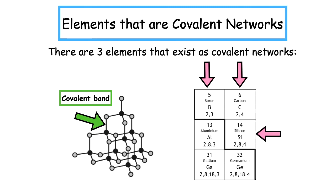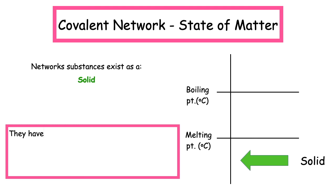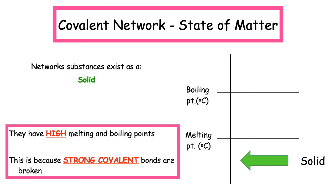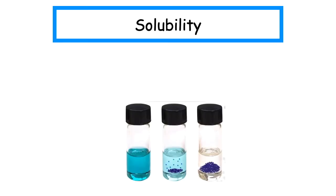All covalent network substances exist as a solid at room temperature. They have high melting points and boiling points, and this is because the strong covalent bonds need to be broken. The energy required to break those bonds is great. Covalent network substances can never conduct electricity. This is because the electrons are not free to move - they are fixed in a covalent bond.